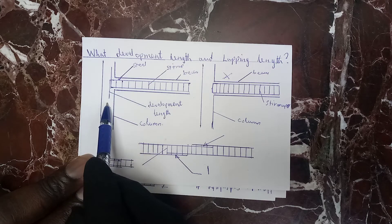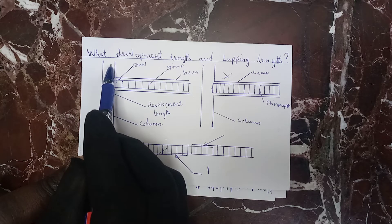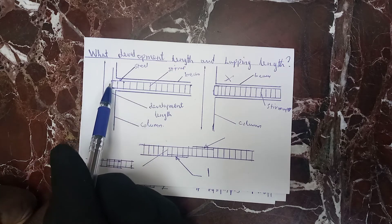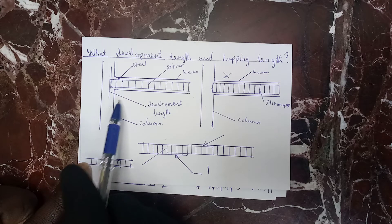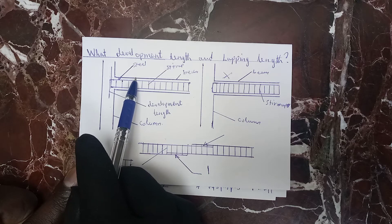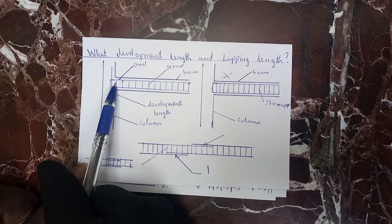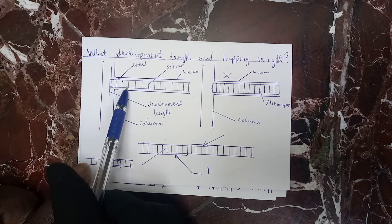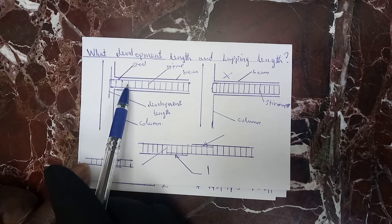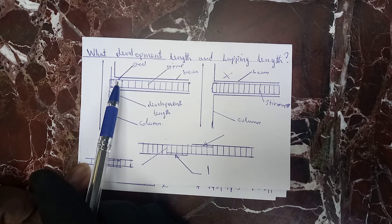This is the development length, these are stirrups. When the bar comes here you bend it down, and when it comes up here you bend it up. Development length is provided in beams to reduce the chances of the beam coming out of the concrete column.